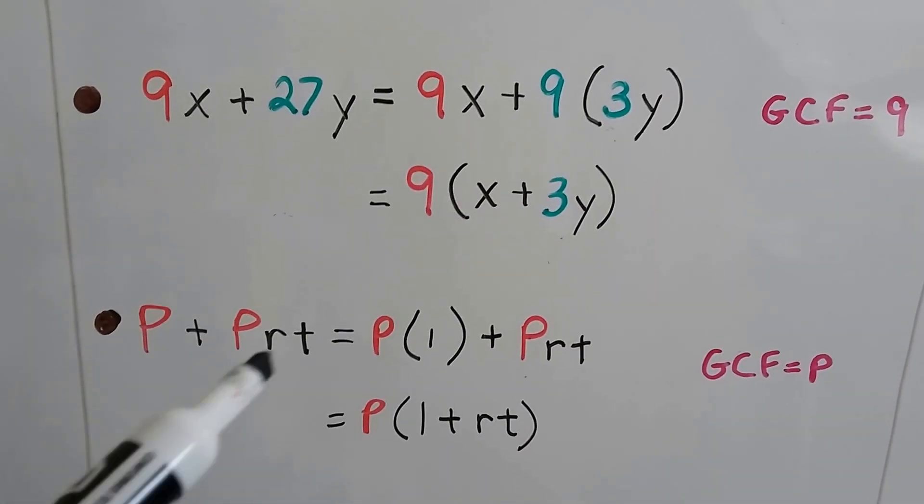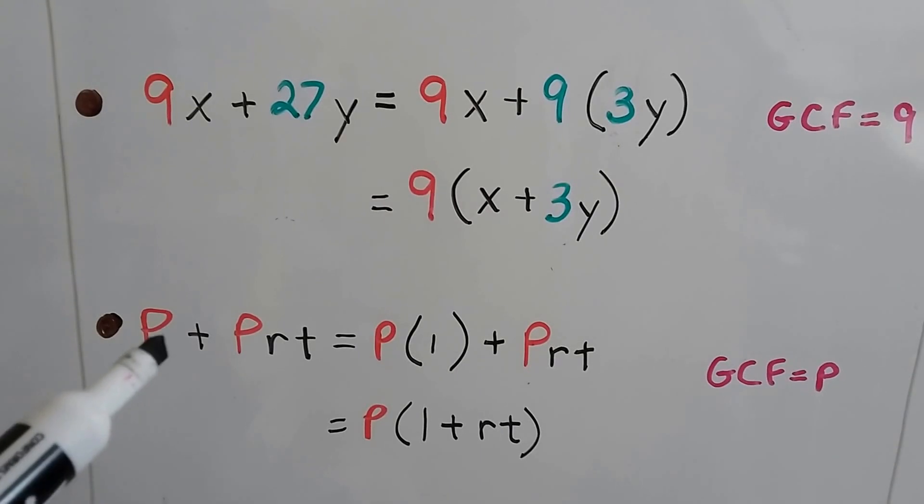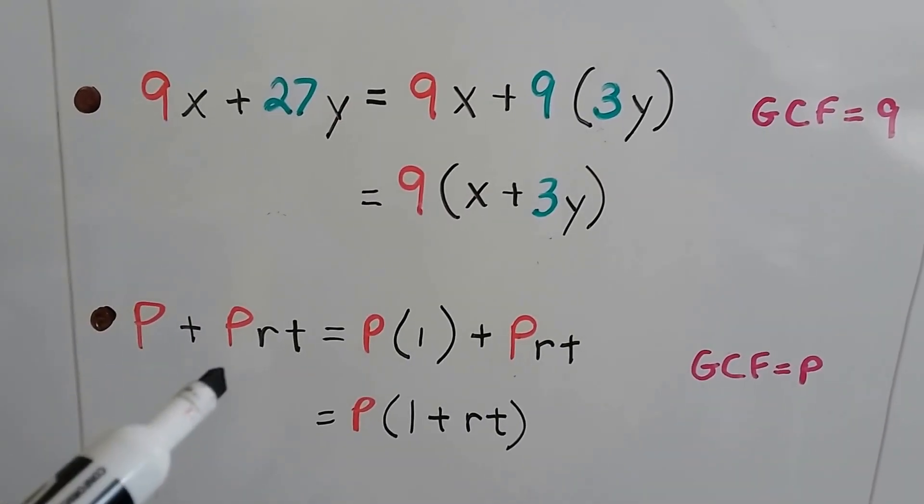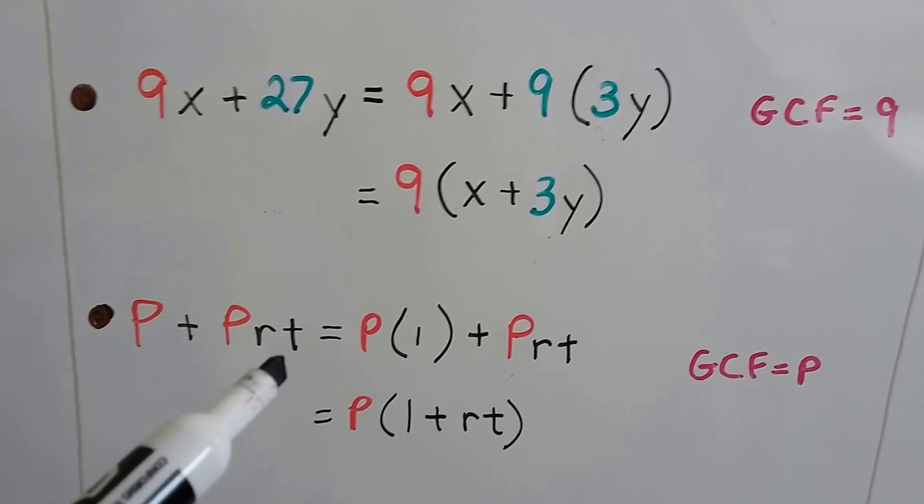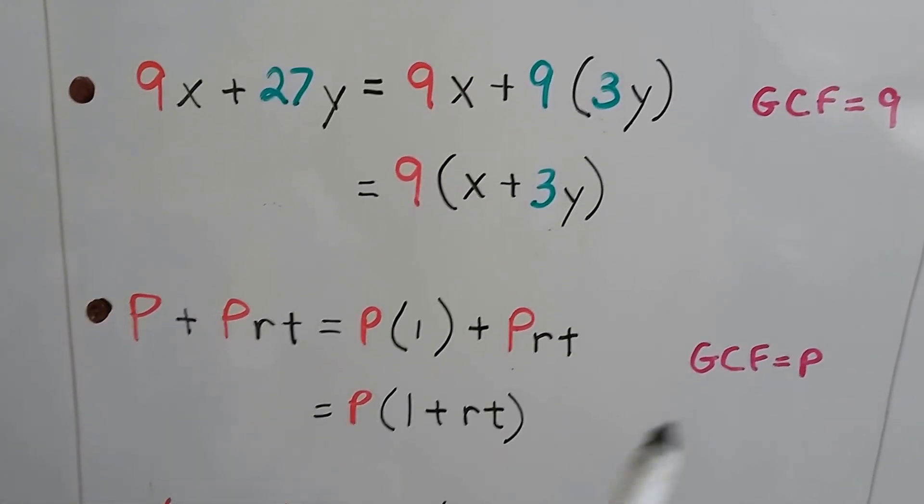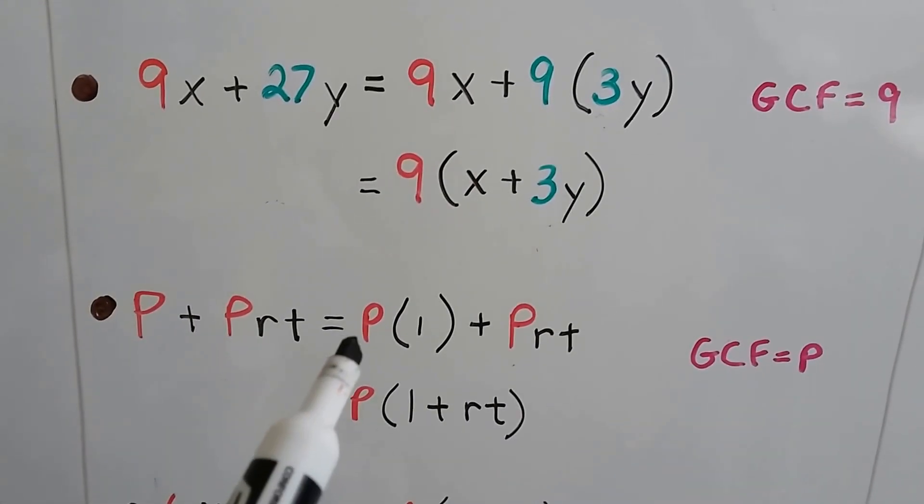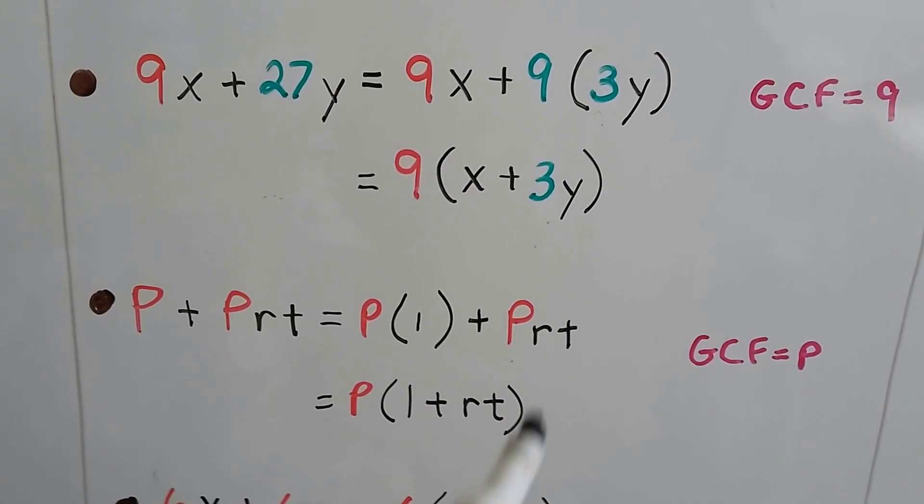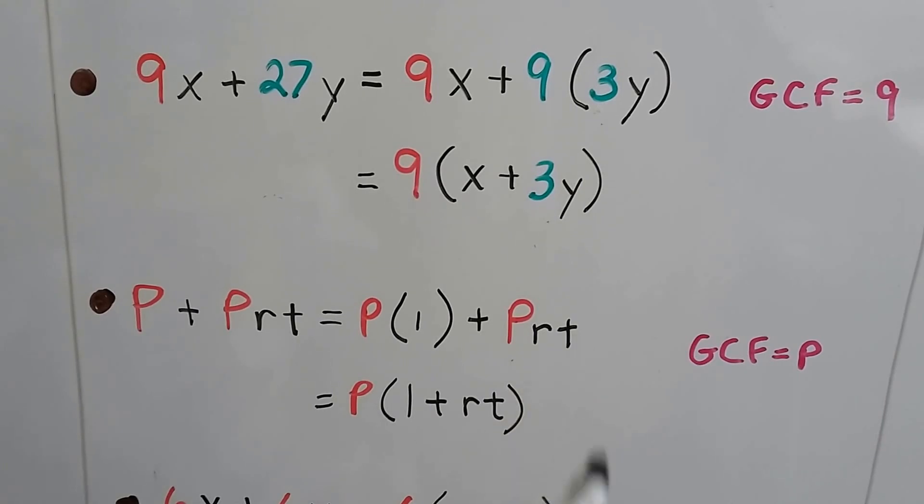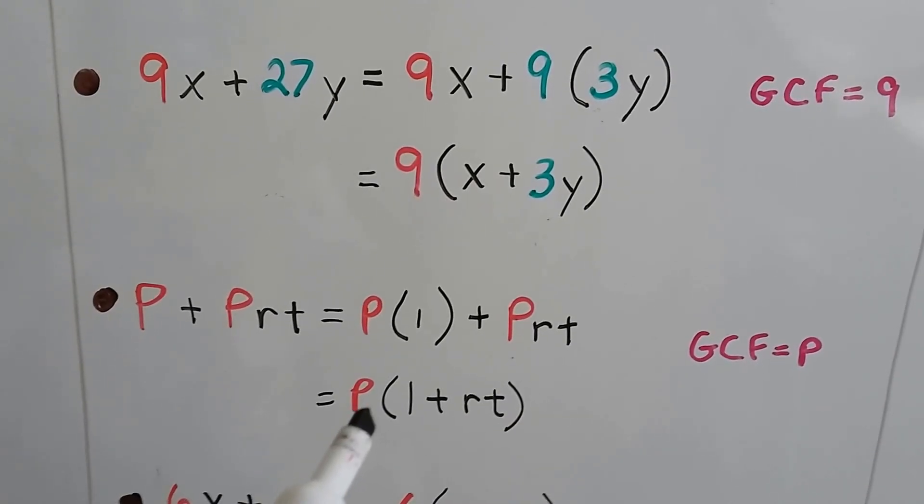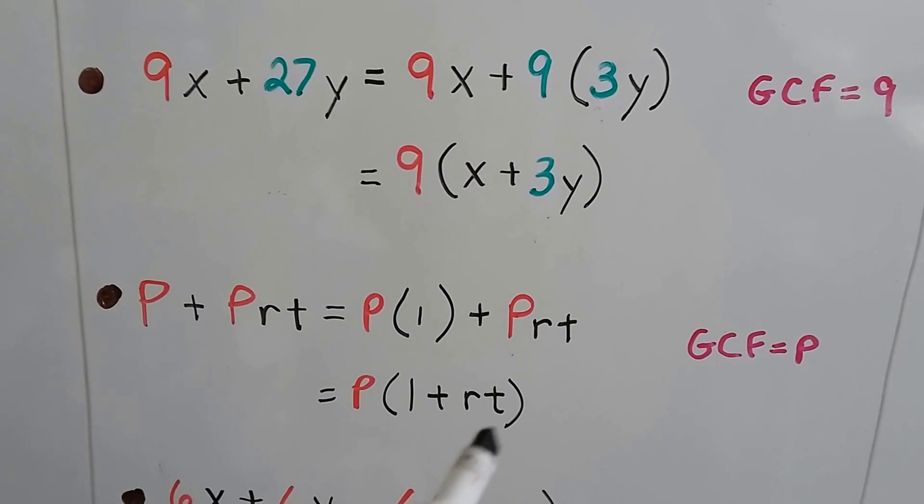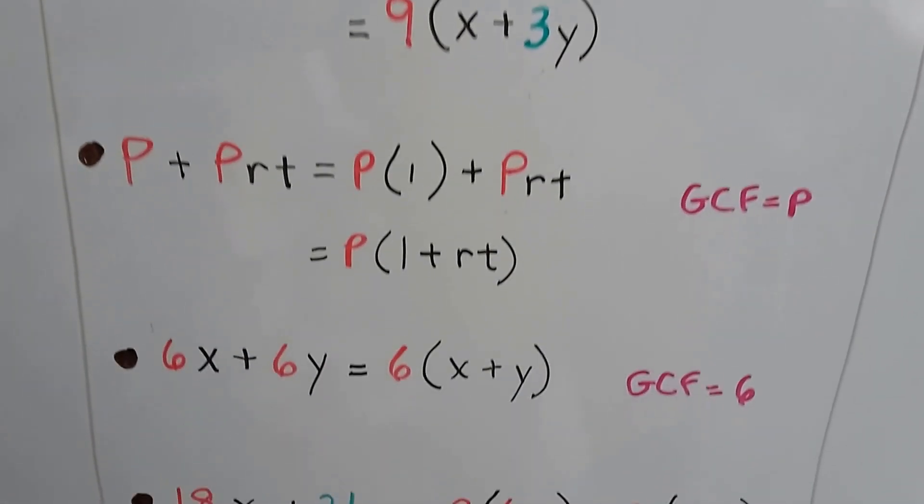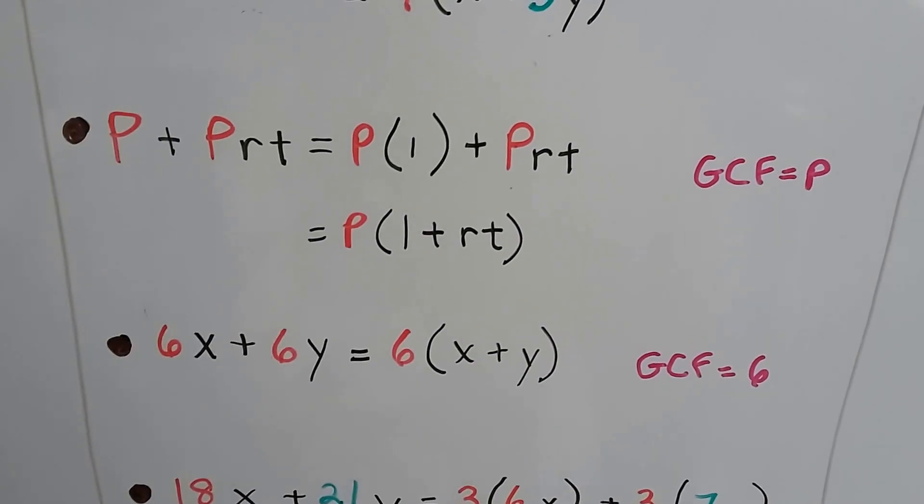Here's the principal rate and time. If the principal plus the principal rate and time, then we can factor out this p for principal as p times 1 plus the p rt, principal times rate times time. It ends up becoming p times 1 plus rt, 1 plus the rate times the time. That's factoring a formula.